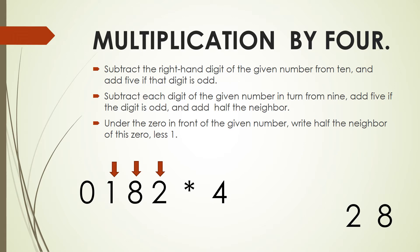Next one is going to be 9 minus 1, which is 8. The rule says we need to add 5 to that 8, giving 13. We also need to add half of the neighbor, which is 4. So it's going to be 13 plus 4, which is 17. We write 7 and carry 1. Now we are under the 0. We write half of the neighbor, which is 0, and add the 1 we are carrying, giving 1. Then we subtract 1, so in total it's 0. We already have the answer.